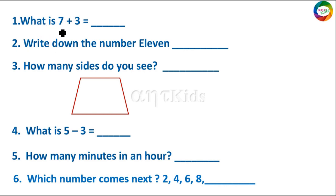What is 7 plus 3? After 7 you have to add 3. So 7, 8, 9, 10. So 7 plus 3 is 10.